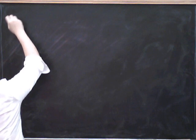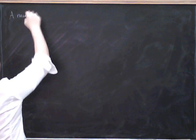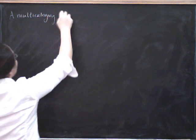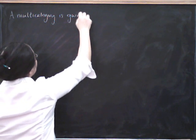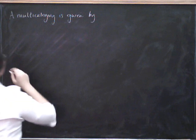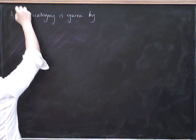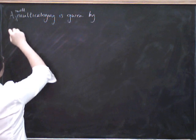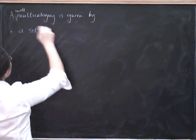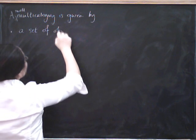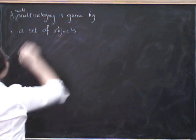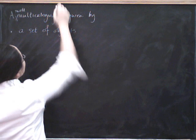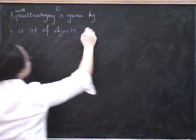So let's see, multi-category, a multi-category is given by... Well, I'm only going to do small multi-categories because I can't be bothered to worry about set issues. A multi-category is given by a set of objects. Let's call this multi-category C. It's given by a set of objects of C.